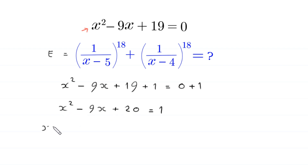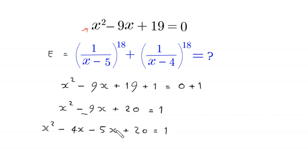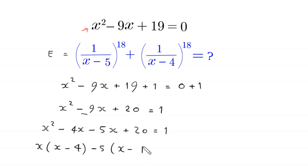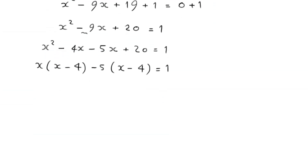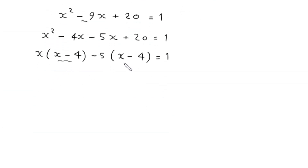The left-hand side is factorable. We write x squared and split negative 9x as negative 4x minus 5x, giving x squared minus 4x minus 5x plus 20 equals 1. From the first two terms we factor out x, leaving x minus 4, and from the last two terms we factor out negative 5, also leaving x minus 4.